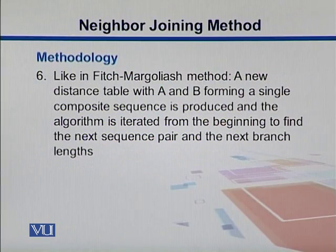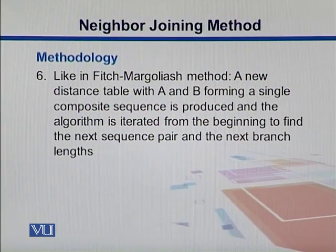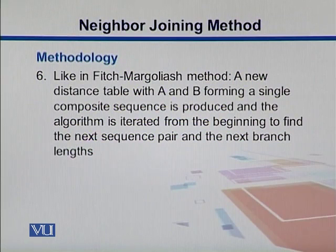We take A and B and combine them to make a composite sequence. Then we iterate until we find the next pair and keep adding. It's like the Fitch-Margoliash method, going iteratively until we come up with the overall tree.